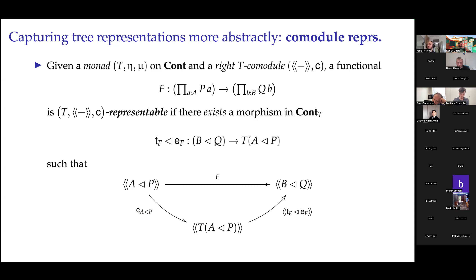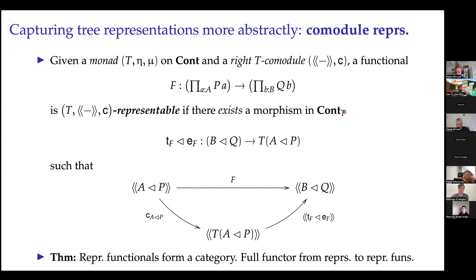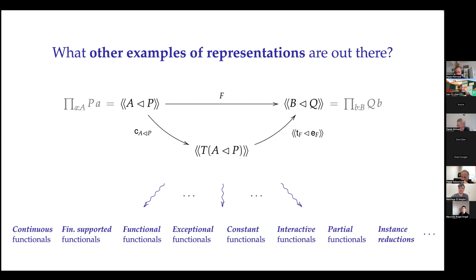We can now formulate the general definition: a functional is co-module representable if there is a container morphism that is a Kleisli map for a given monad T — which doesn't have to be the tree monad — such that the diagram commutes. This is the abstract version of what we had before. The representable functionals form a category, with a full functor from Kleisli maps in Cont_T to the representable functionals.